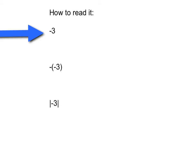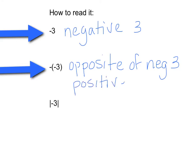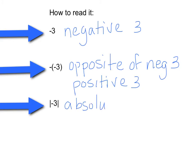This first symbol here means negative 3. Negative 3 means that you owe somebody $3, or you dig down 3 feet, or you are 3 feet underwater. The next symbol would be the opposite of negative 3, which would actually be positive 3. And the last symbol here is what we call the absolute value. When we put those braces around a number, that means we are looking for the absolute value, or the number's distance from 0.